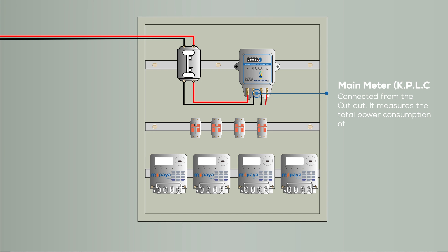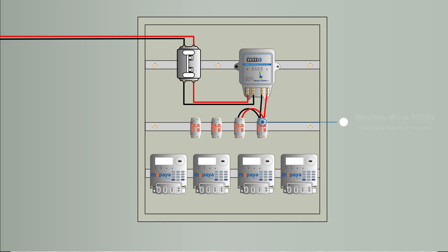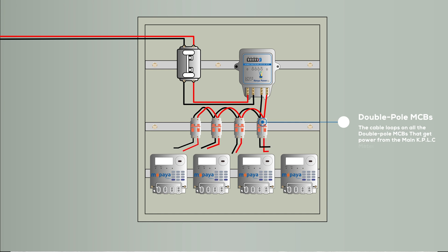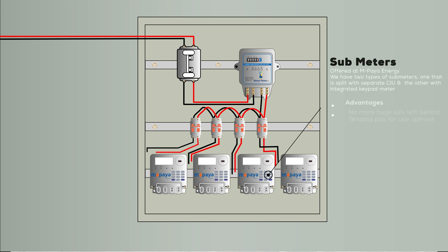From the main meter, the power is connected into the double pole MCB units, then looped to each single MCB depending on the number of MCBs in the system. Each MCB is connected to its own sub-meter, which we offer at Empire Energy.